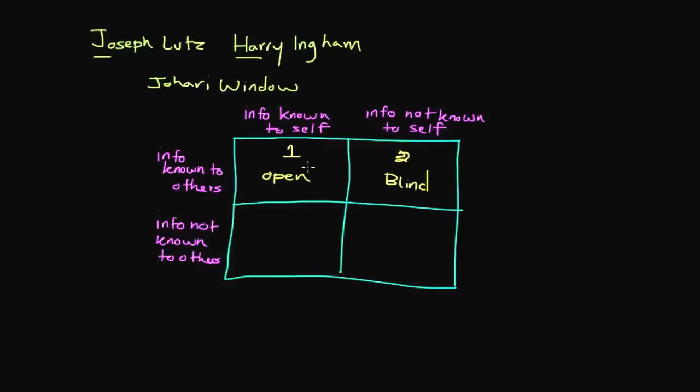Now in the third area, this is the phase that information that we know about ourselves, but others have no idea. And so this is actually called the hidden area. And oftentimes we choose to keep this hidden for a reason.